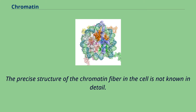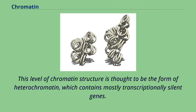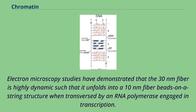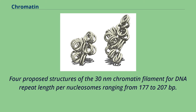The precise structure of the chromatin fiber in the cell is not known in detail. This level of chromatin structure is thought to be the form of heterochromatin, which contains mostly transcriptionally silent genes. Electron microscopy studies have demonstrated that the 30 nanometers fiber is highly dynamic such that it unfolds into a 10 nanometers fiber beads on a string structure when transversed by an RNA polymerase engaged in transcription.